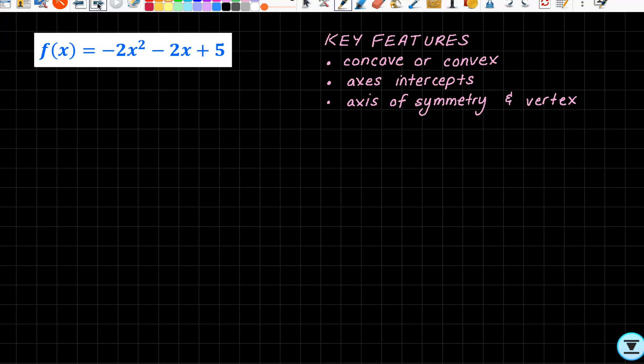Here we go with the first one. Just by looking at our function, we can see that it must be concave because the coefficient of x² is minus. So I already know it's going to look something like that.